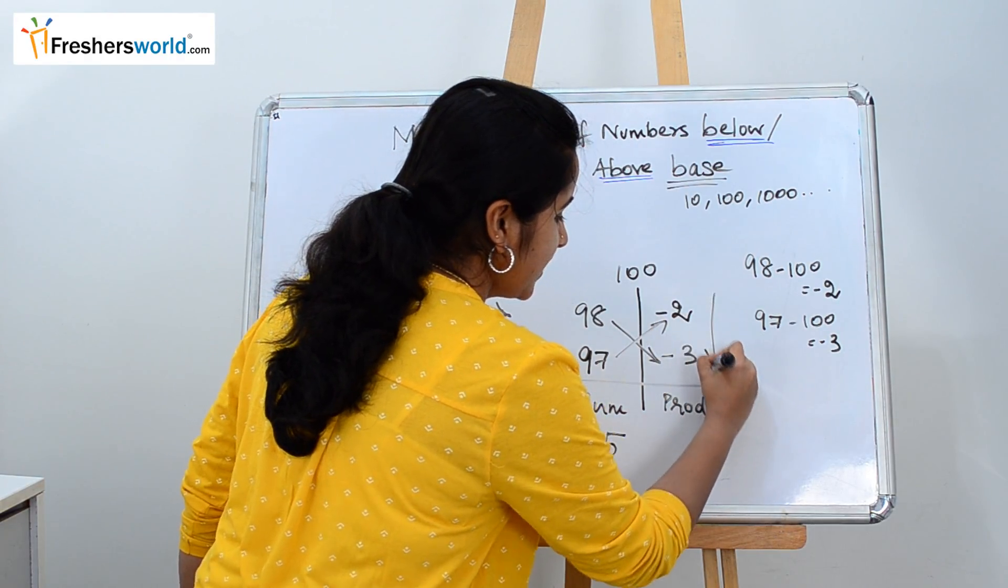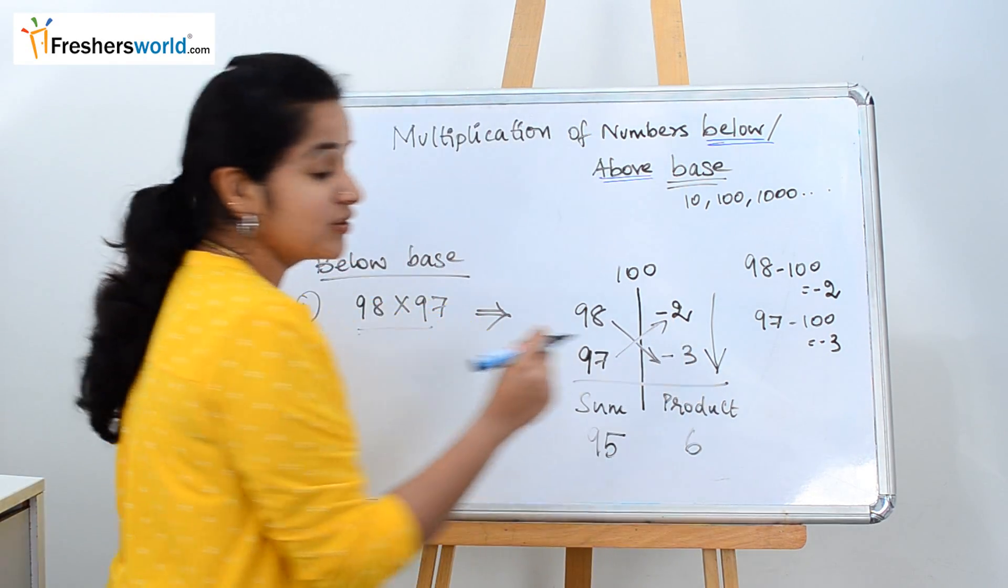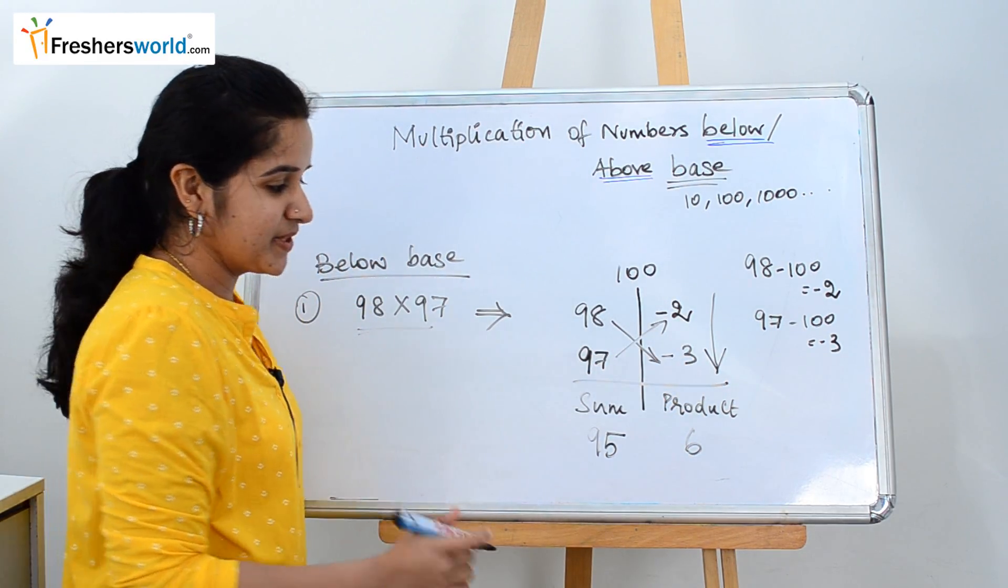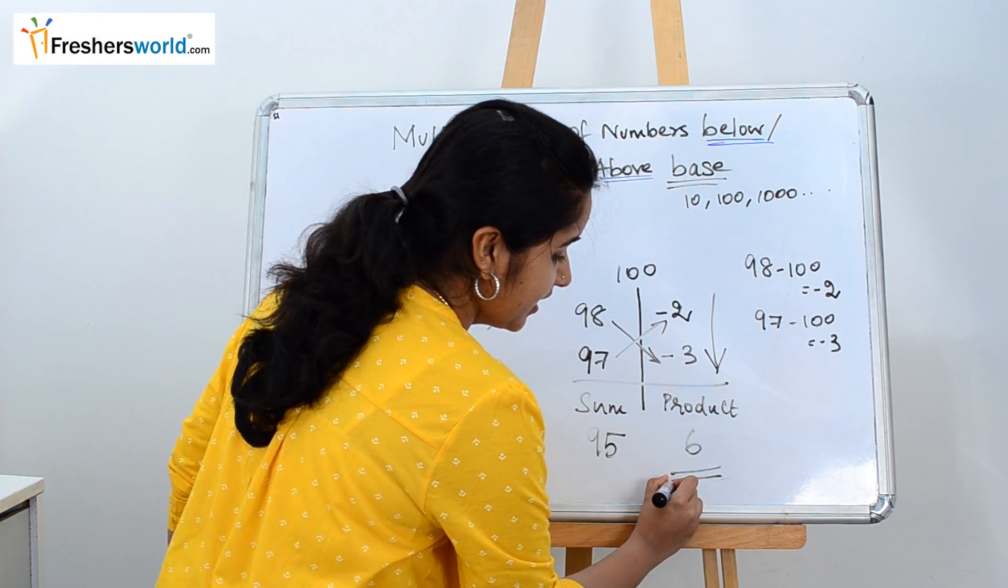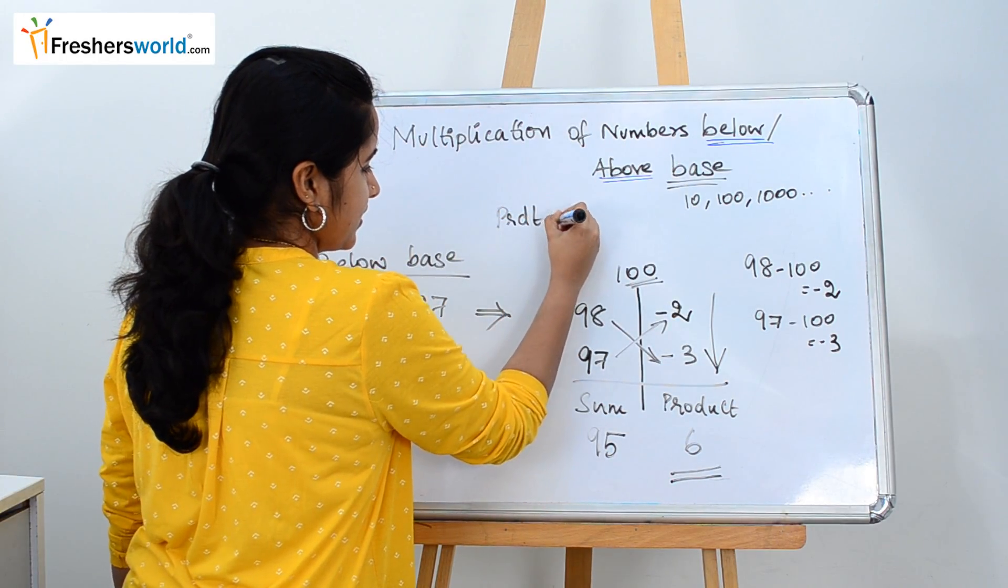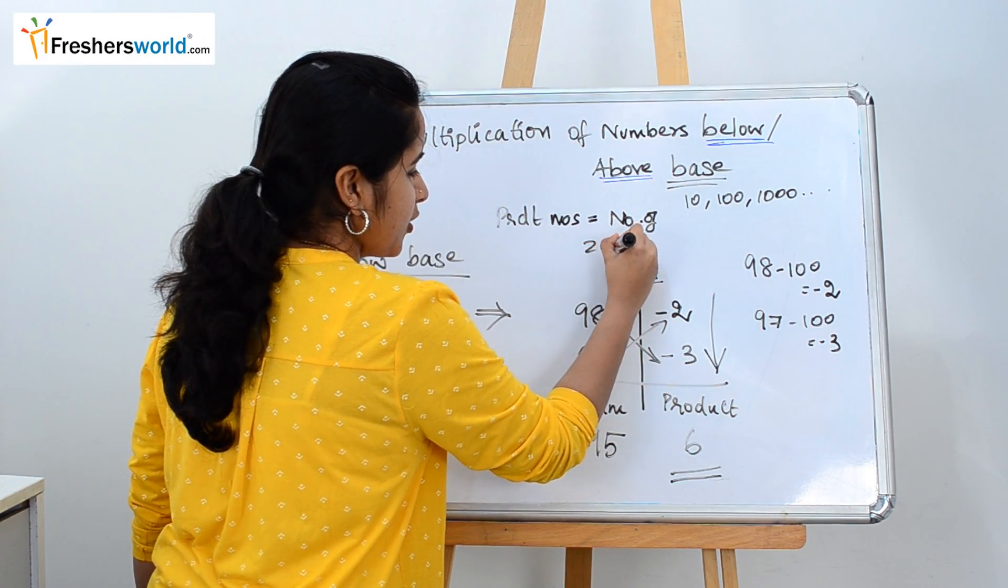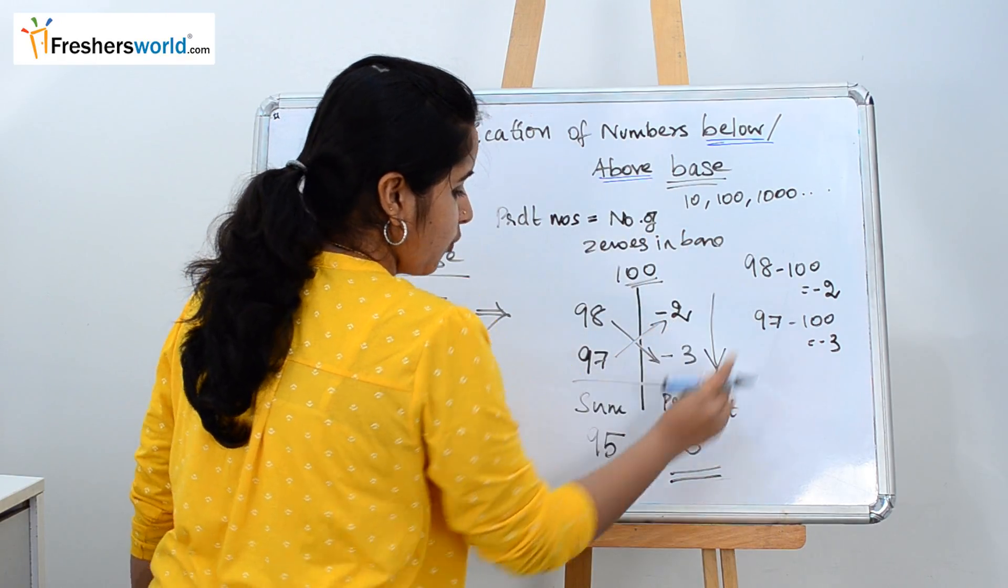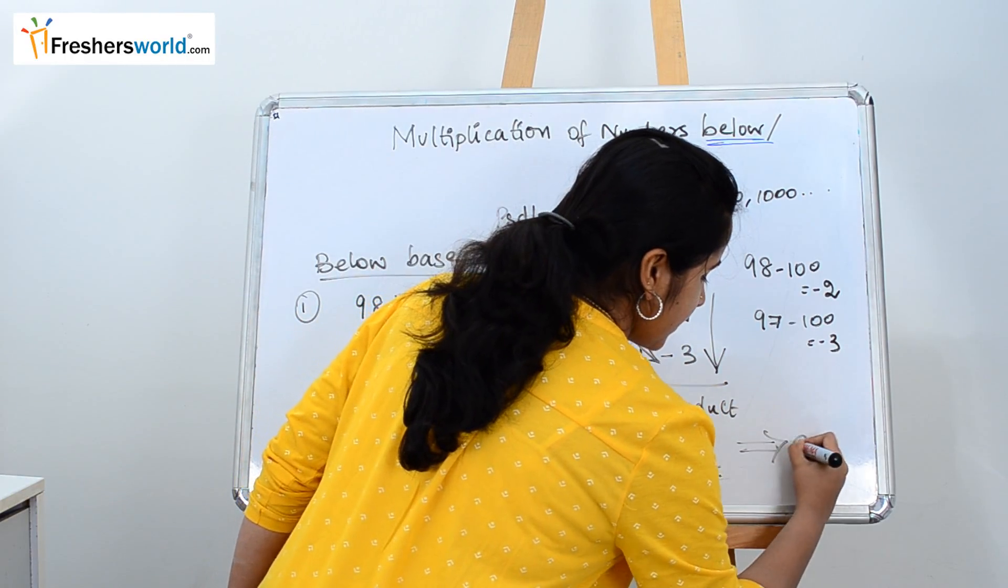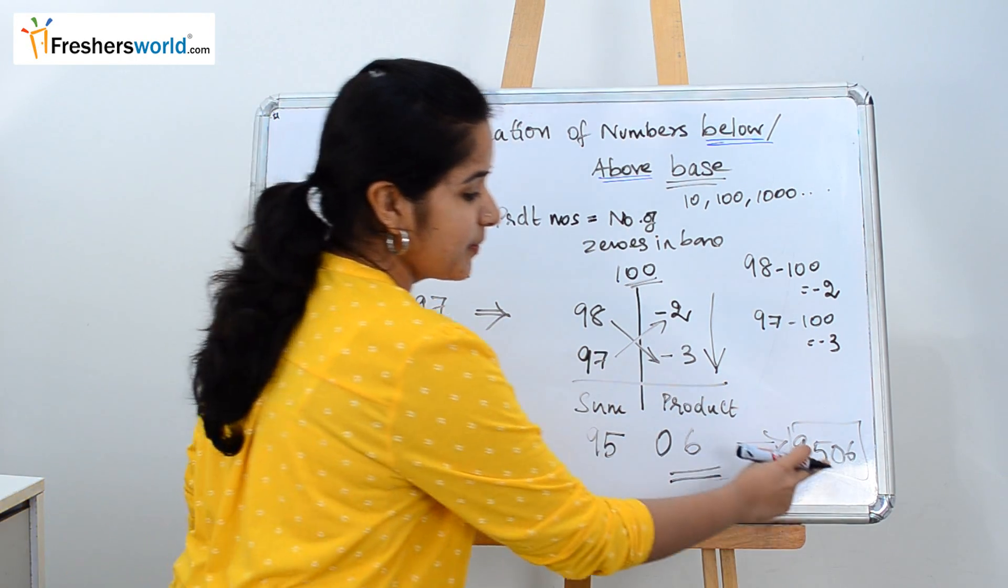Next is the product. Product of these numbers. So minus 2 into minus 3 is plus 6. Yes, we are going to take also the signs of both these numbers. So are we done with it? No. The last final step is that the product number that has come here should be equal to the number of zeros in your base. The number of digits basically should be equal to the number of zeros in your base. So we have one number but our base has 2 zeros. So what are you going to put? One more 0. So which is 9506. The multiplication of 98 into 97 is 9506.